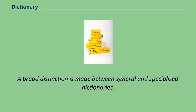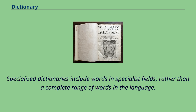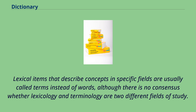A broad distinction is made between general and specialized dictionaries. Specialized dictionaries include words in specialist fields, rather than a complete range of words in the language. Lexical items that describe concepts in specific fields are usually called terms instead of words, although there is no consensus whether lexicology and terminology are two different fields of study.